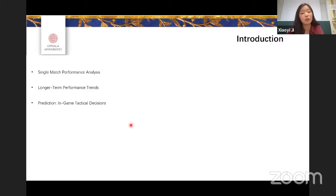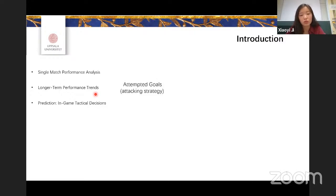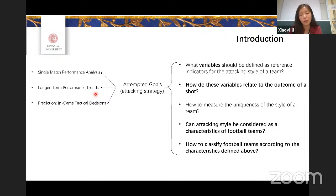Normally when we talk about football data analysis, three aspects come up: analyzing the performance of a team in a single match, analyzing performance over a longer term, and predicting what tactic a team should use in following games. Our project focuses on the attacking strategy — specifically attempted goals. The questions I have include: what variables should be reference indicators for attacking style, how do they relate to shot outcomes, how to measure the uniqueness of a team's style, and how to classify teams by these characteristics.